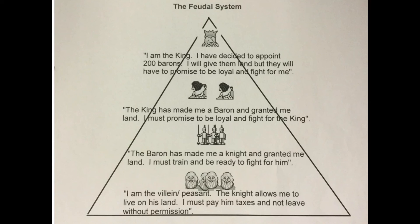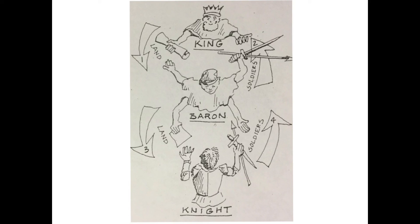'I am the villain — the peasant. The knight allows me to live on his land. I must pay him taxes and not leave without permission.' This is one of the many diagrams you may see when studying the feudal system. In Arrow 1, the king is giving land to the barons. In Arrow 2, the barons are promising to fight for the king and also promising to provide him with soldiers. In Arrow 3, the barons are giving land to the knights. In Arrow 4, the knights are promising to provide soldiers and to fight for the barons.